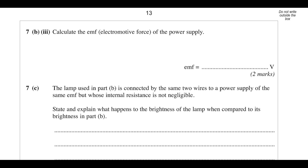Calculate the EMF. It's going to be the potential difference across the lamp itself plus 2 times 2.04 volts for the two wires. So 2 times 2.04 plus 12 gives 16 volts — a 16 volt power supply.